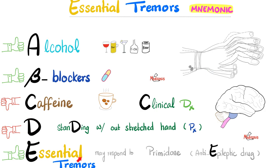Essential tremors might respond to the anti-epileptic drug known as primidone. It makes perfect sense — it's anti-epileptic, it wants to decrease brain activity, it wants your brain to calm down, and it wants your tremor to calm down as well. Medicine makes so much sense once you understand what you're talking about.